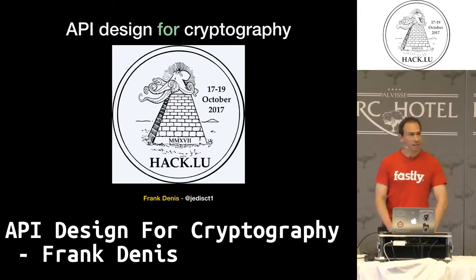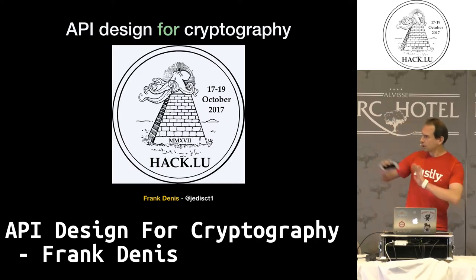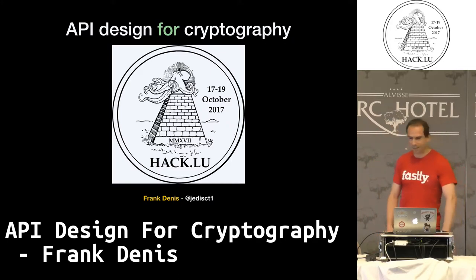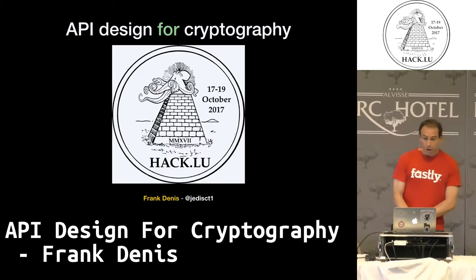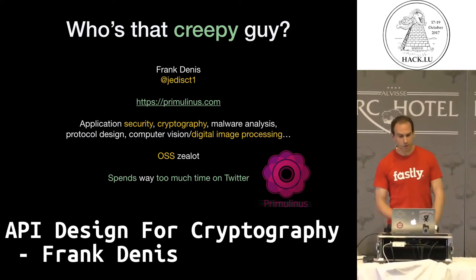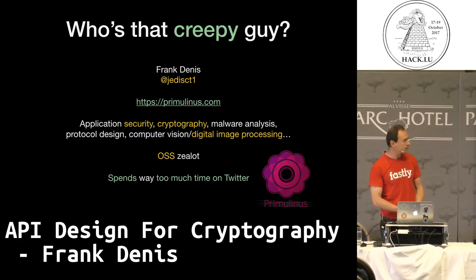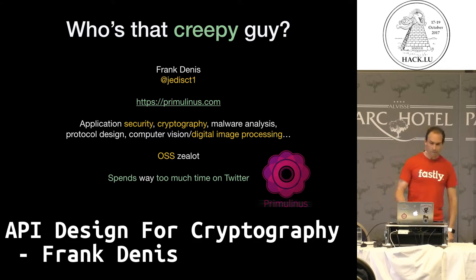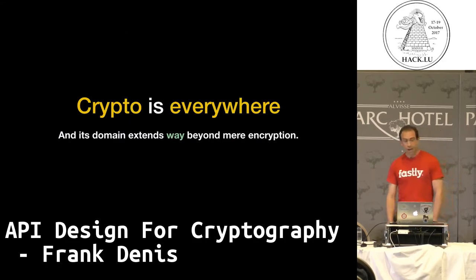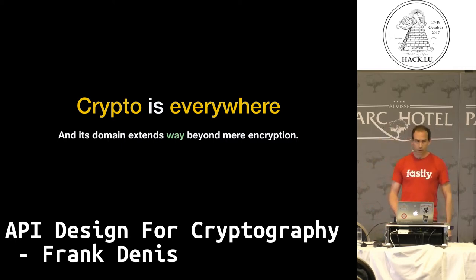Good afternoon everyone. This is a talk about crypto and usability — there's not going to be anything about math, so stick around. I'm Frank Denis. I work on a bunch of different things; the main thing I do right now is build models for computer vision and digital image processing, but what we're going to talk about right now is really about crypto. Crypto means a lot of different things, but usually when you think you need crypto for the first time, it's because you need to encrypt stuff.